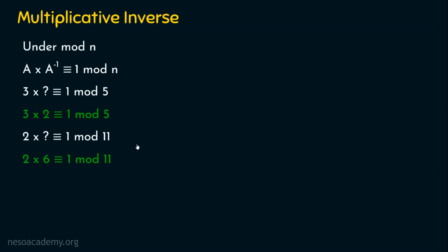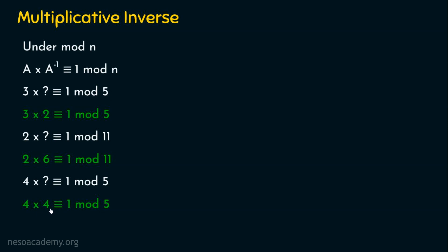Let's try one more: what is the multiplicative inverse of 4 mod 5? I request you to pause this video and work it out. The answer: 4 times 4 is 16, and 16 divided by 5 gives remainder 1. So 4 is the multiplicative inverse of 4 mod 5.